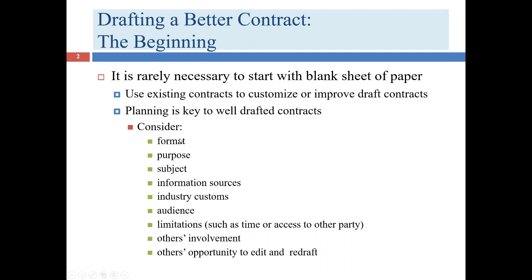One thing to think about as you get started — to help you decide which models to use — is the format. Some deals result in hundred-plus page contracts; others can fit on a single page. Format varies beyond just page count: how you organize it, how many moving pieces there are, whether you have an index or table of contents, where you put your defined terms — at the beginning, the end, or interspersed throughout.